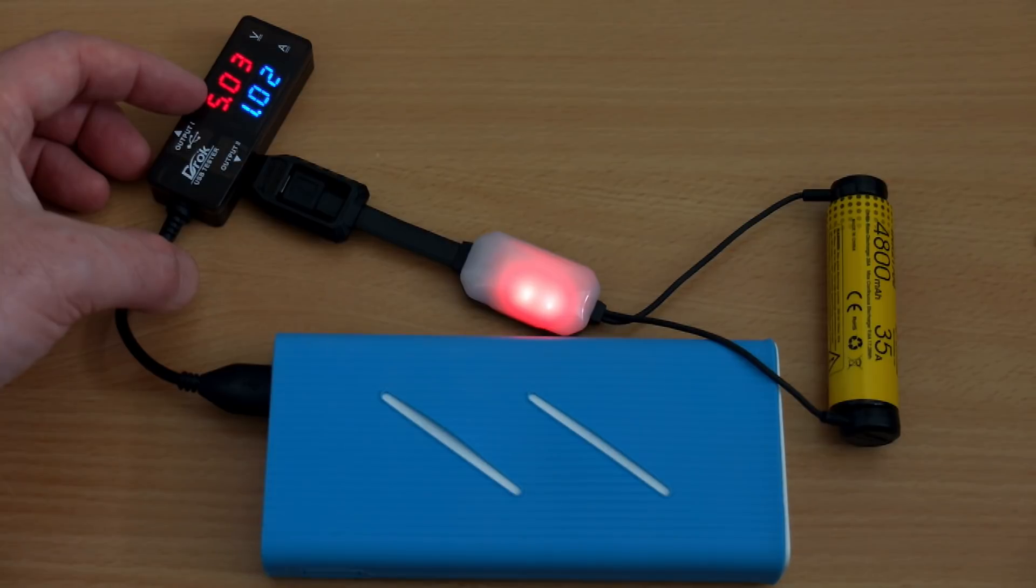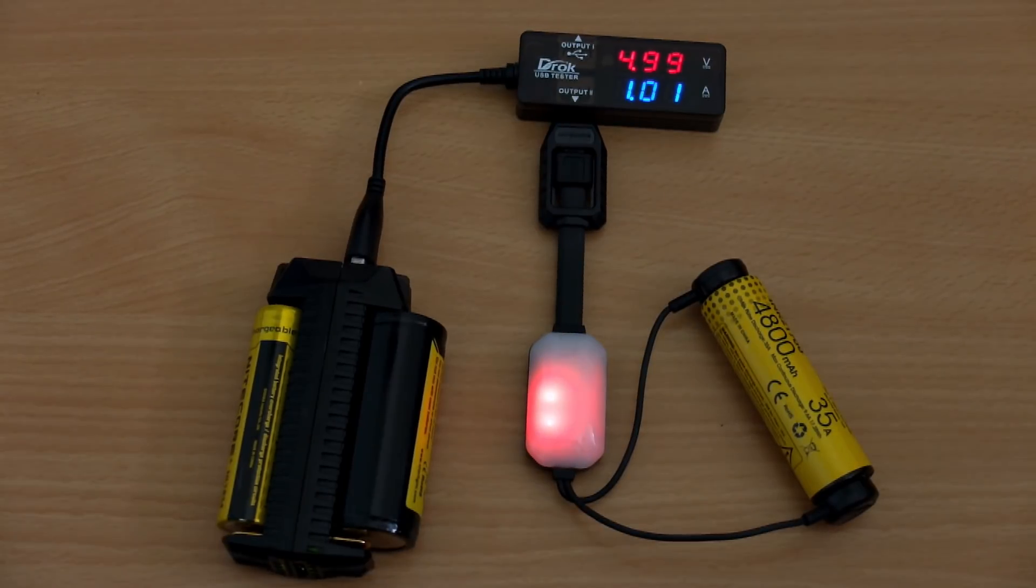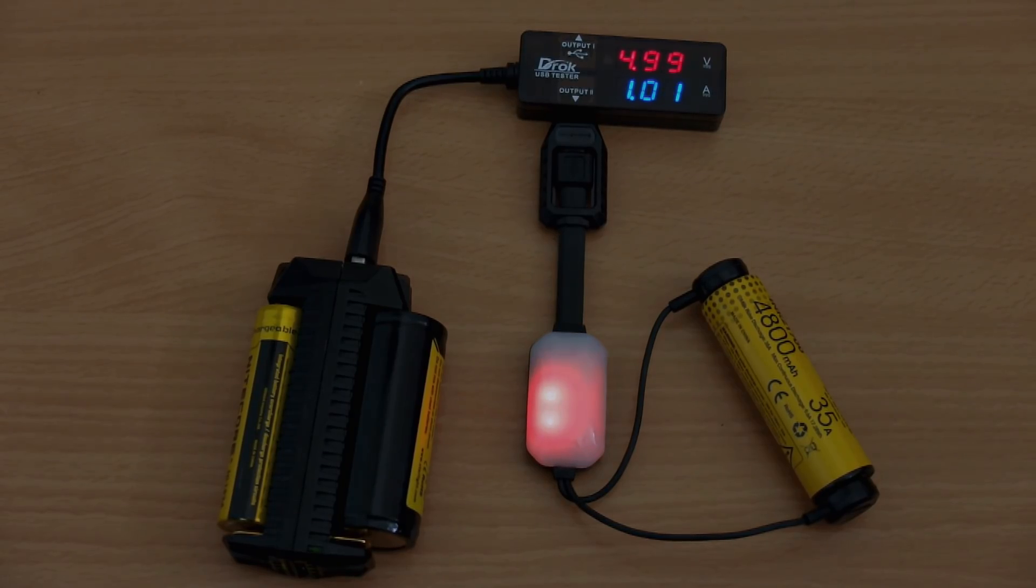The amperage does jump around a little bit for about 20 seconds after you have connected the battery and you're charging it, and then it stabilizes and gets to around about the one amp for charging. So you've one amp charging and one amp discharging with the power bank.